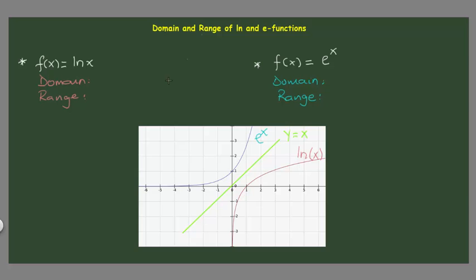We will start now with the domain. We saw in the previous video that the domain of a function is all about the x-values. As you can see here, the domain — the x-value — it is from zero. The natural log is defined only in this section here, from zero to plus infinity. So this domain is going to be zero to plus infinity.